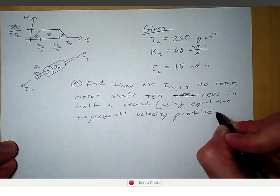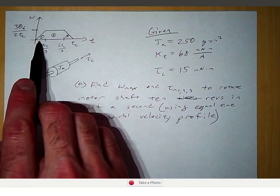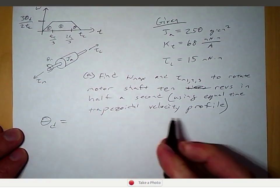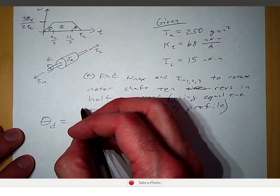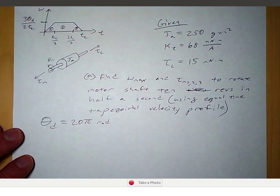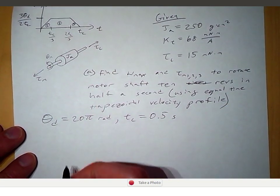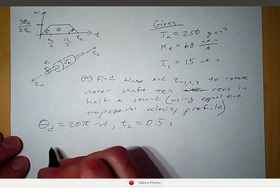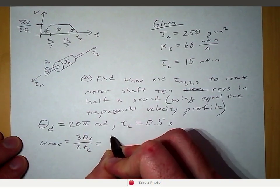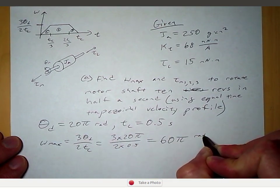Using the equal time trapezoidal velocity profile, the motor shaft rotates ten revolutions, which is 20π radians. So our desired displacement theta_d is 20π radians, and the time to complete that is 0.5 seconds. From the profile formula, omega_max equals 3 theta_d divided by 2·tc, giving us 3 times 20π divided by 2 times 0.5, which equals 60π radians per second.